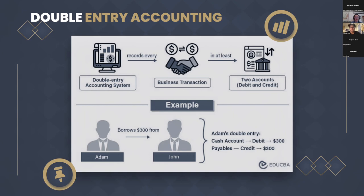Recording transactions is the first step, and every transaction affects at least two accounts. One account is debited, which means it's increased, and another is credited to decrease it, to keep the books in balance. This is a little counterintuitive compared to what you'd think of debits and credits as on your bank statement. Each transaction involves a debit and a credit, and these two must always equal each other so the accounting equation remains balanced.